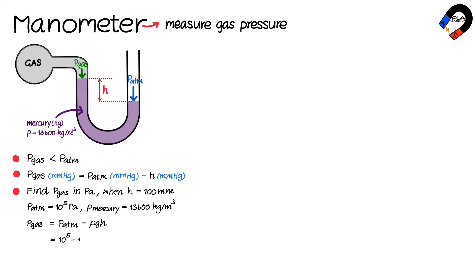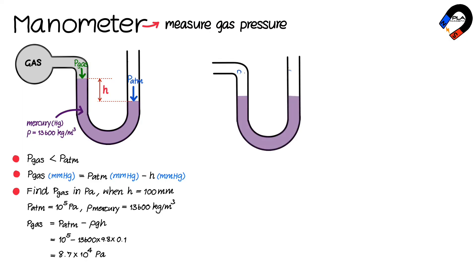Substituting the values: atmospheric pressure = 10⁵, ρ = 13,600, g = 9.8, and h = 0.1 meters into the equation yields a gas pressure of 8.7 × 10⁴ pascals. If the mercury levels are equal on both sides,